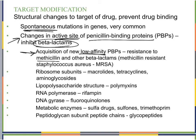This is where we get MRSA — methicillin-resistant Staphylococcus aureus — because rather than methicillin being able to attach to the penicillin-binding proteins and decrease cell growth, they've developed a modification to their PBPs so methicillin doesn't attach very well anymore. Since it doesn't attach well, methicillin can no longer be used against Staphylococcus aureus infections, which can be very dangerous.